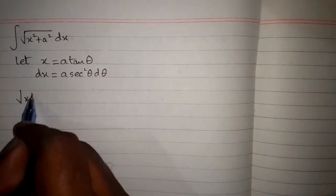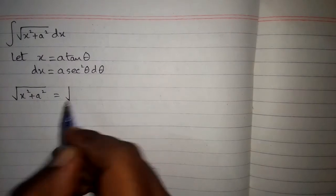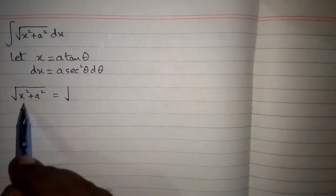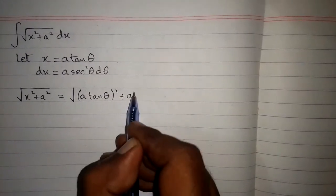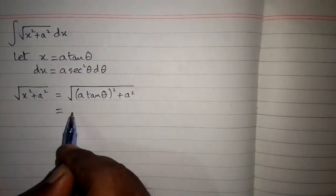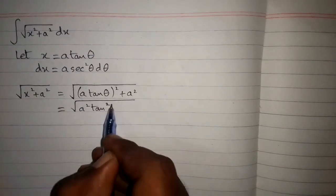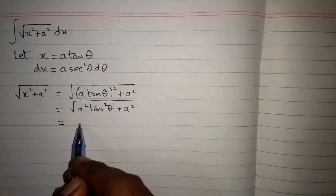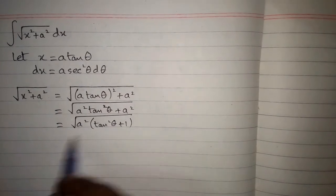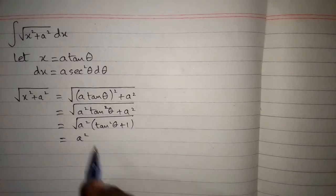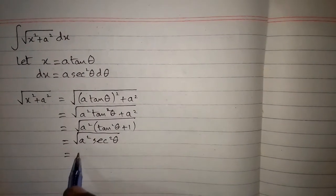Then we will find the value of the square root of x squared plus a squared. We substitute x = a tan θ, giving us the square root of a squared tan squared θ plus a squared. Taking a squared common, we get square root of a squared times (tan squared θ plus 1). Since tan squared θ plus 1 equals sec squared θ, we have square root of a squared sec squared θ.